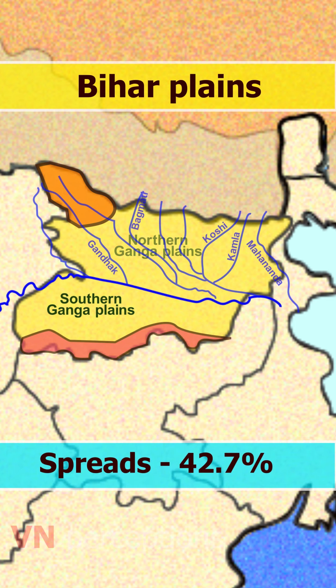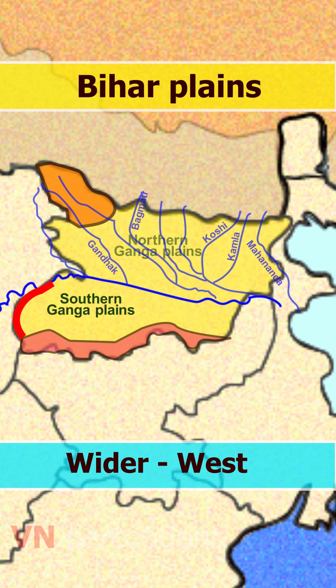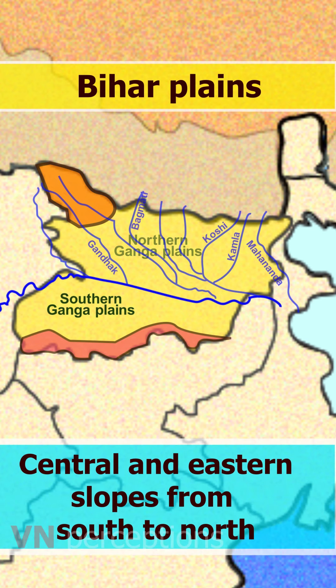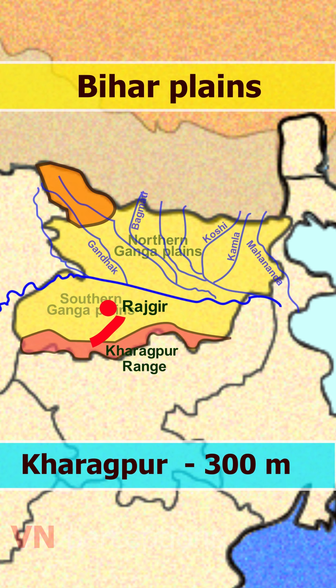The south Ganga plains spread over 42.7% of the total area of Bihar. The eastern portion of the alluvial plain is interrupted by Kharagpur hills. The south plains of Bihar are wider in the west and narrower in the east. The western portion slopes from south-west to north-east, while the central and eastern parts slope from south to north. The hills of Rajgir have an elevation of 445 metres, while the Kharagpur range has an elevation of 300 metres.